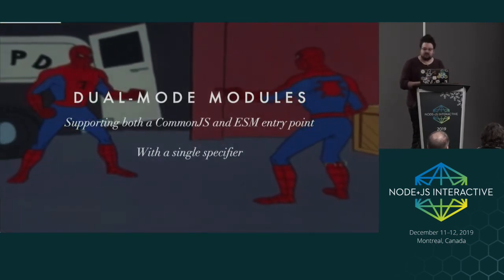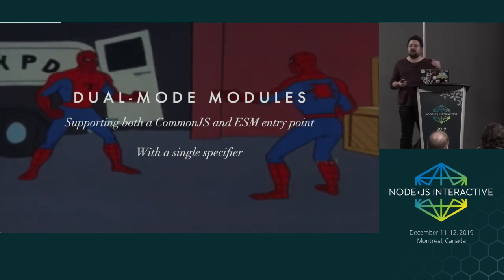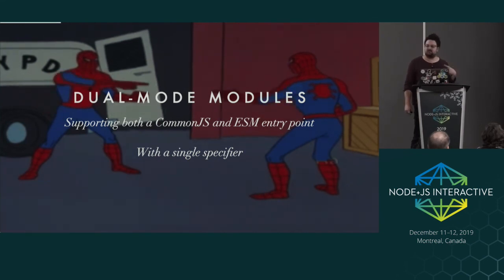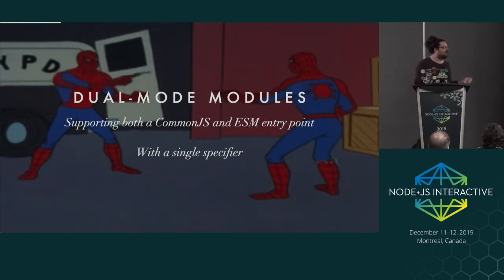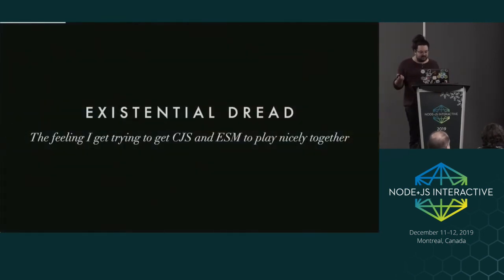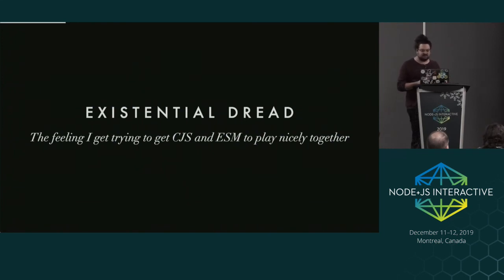Dual mode modules is supporting both CommonJS and ESM entry points with a single specifier. It's similar but different from transparent interop - it can end up with a lot of the same behavior, where you have a module you can both require and import, but it's not exactly the same thing because you're potentially having two different entry points and two different items in the graph. And finally, existential dread - which is the feeling I get trying to get CJS and ESM to play nicely together.